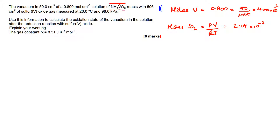The numbers 2.04 × 10⁻² and 4 × 10⁻² don't mean much on their own — what matters is the ratio. Four is twice two, so twice as much vanadium reacts with sulfur dioxide. The next thing to think about is the electron transfer: how many electrons are being transferred? The electrons are coming from sulfur dioxide — it's giving up electrons and being oxidised — while vanadium is accepting them and being reduced.